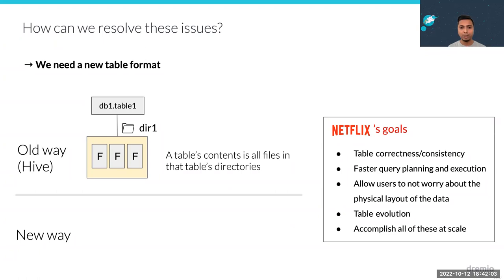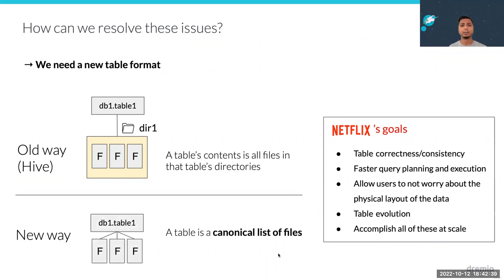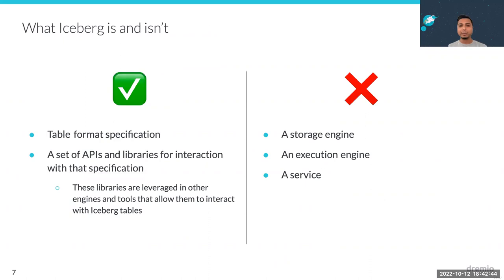Looking at these problems and all of these cons, the whole issue was that Hive tracked files at the folder level. The solution was actually very simple: track at the file level instead of the folder level. This small change effectively mitigates those cons — and that's exactly what Iceberg does. The new approach tracks files directly rather than folders.